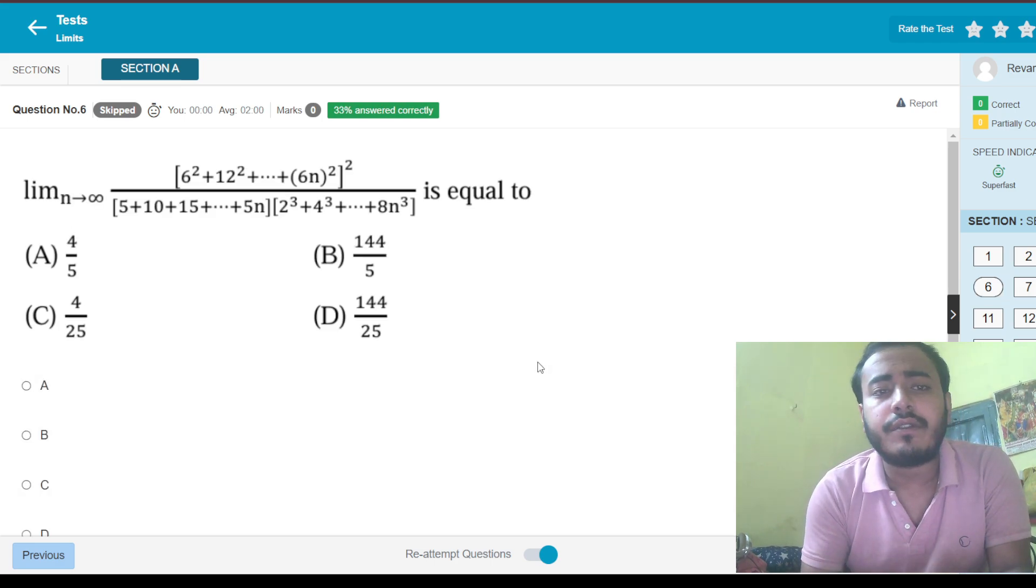Let's see this question: 6 squared plus 12 squared all the way up to 6n whole squared. As soon as I see this, 6 squared can be taken common, and the whole squared means 6 to the power 4 is going to come out. Inside, we will have 1 squared plus 2 squared plus n squared whole squared. In the denominator, I see 5 plus 10 up to 5n, so 5 can be taken common. We see 2 cubed can be taken common, and it would be 1 cubed plus 2 cubed up to n squared. The highest power in the numerator is going to be n to the power 6. You can apply all these formulas: 1 plus 2 up to n is n into n plus 1 by 2. The sum of the cubes should be n into n plus 1 by 2 whole squared. The sum of squares would be n into n plus 1 into 2n plus 1 by 6. Simply divide by the highest power of n in numerator and denominator. Except the leading term, everything else cancels out. You are left with the constant, which is the answer.